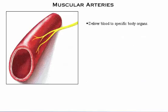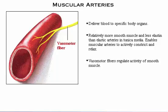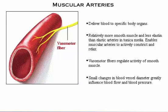Muscular arteries deliver blood to specific body organs. They have relatively more smooth muscle and less elastin than elastic arteries, enabling them to actively constrict and relax. Vasomotor fibers of the sympathetic nervous system regulate the activity of the smooth muscle in muscular arteries. Depending on the needs of the body, the vasomotor fibers can cause vasoconstriction — reduction in lumen diameter due to smooth muscle contraction — or vasodilation, widening of the lumen due to smooth muscle relaxation. Small changes in blood vessel diameter greatly influence blood flow and blood pressure, making the muscular arteries critical in regulating circulatory dynamics.